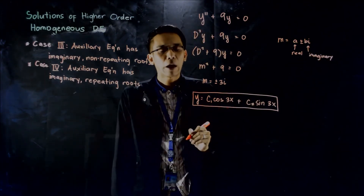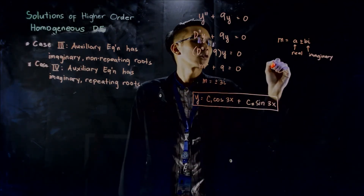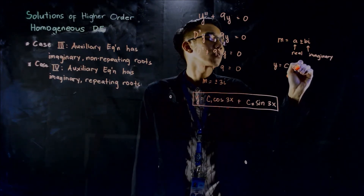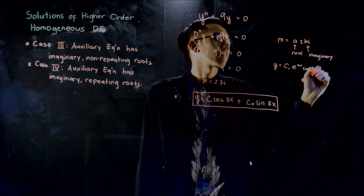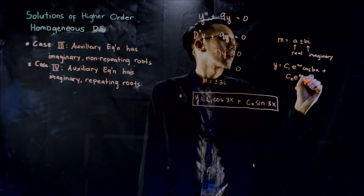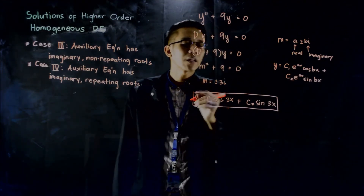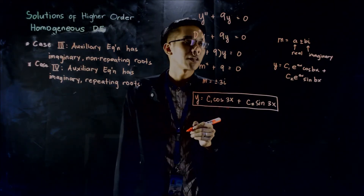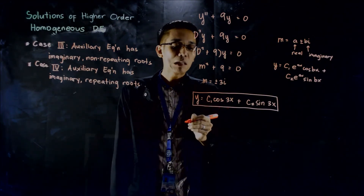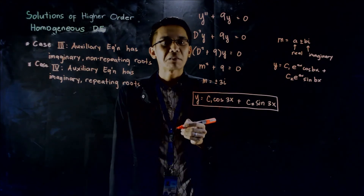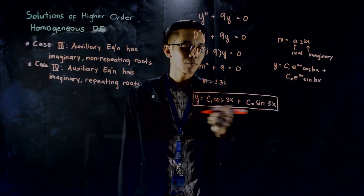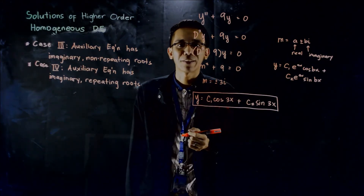For this kind of root, the solution of the differential equation becomes y equals c₁ e raised to ax cosine bx. In our example, the value of the real part of our imaginary number is 0. That's why you do not see e raised to the real part times x, because e raised to 0 is just 1. So this is the solution of our differential equation.